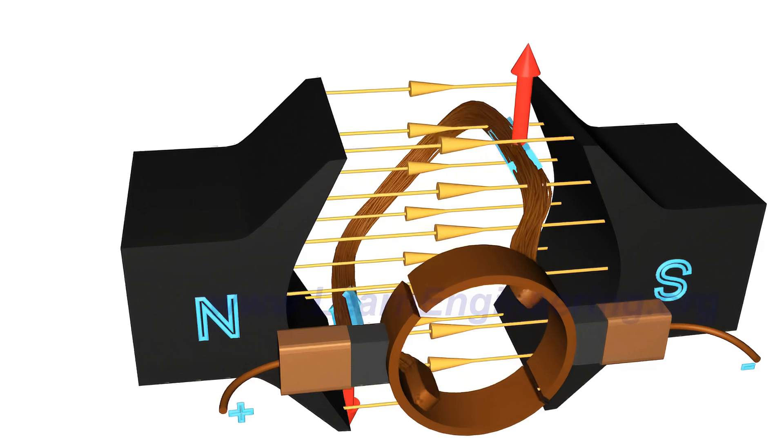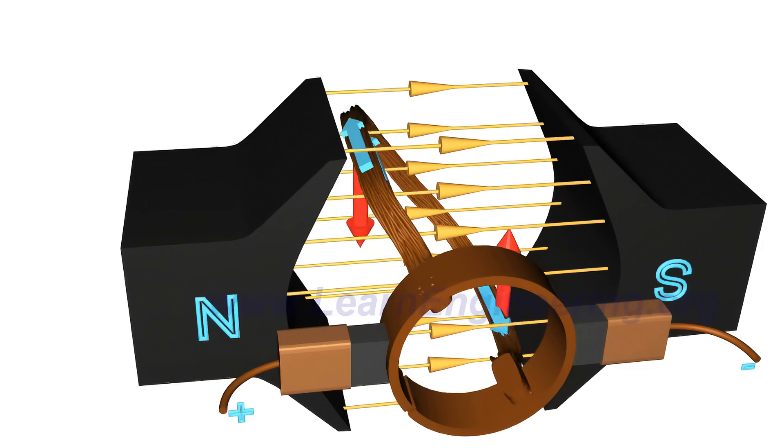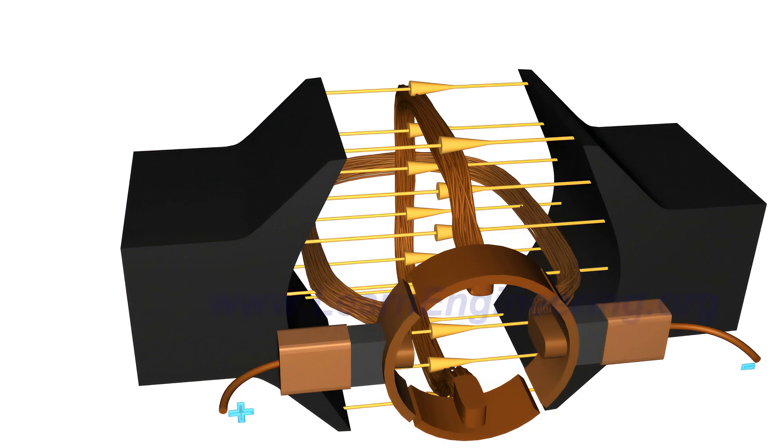Here is the trick to overcoming this problem. Add one more loop to the rotor with a separate commutator pair for it. In this arrangement, when the first loop is in the vertical position, the second loop will be connected to the power source, so a motive force is always present in the system.